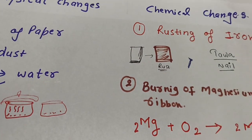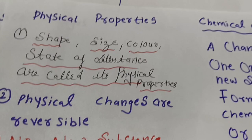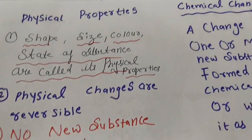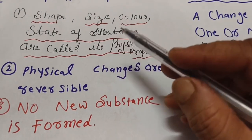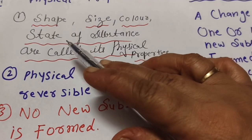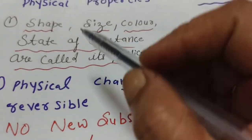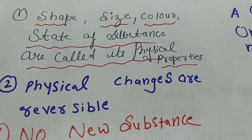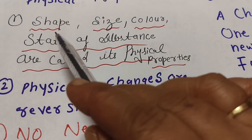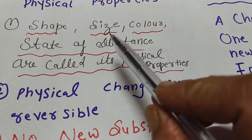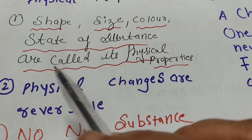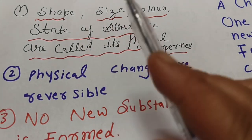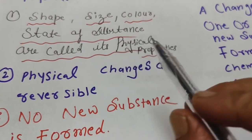Now the most important thing: in physical changes, only the physical properties change. Physical properties include shape, size, color, and state of the substance.